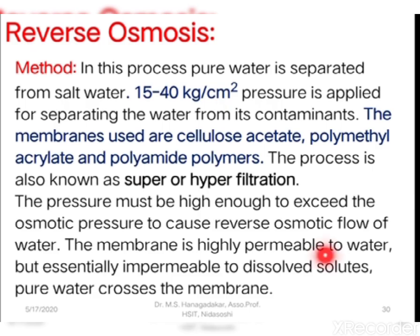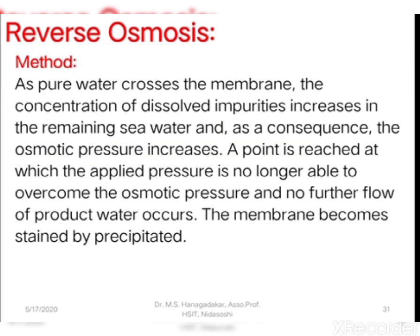The membrane is highly permeable to water only but essentially impermeable to the solutes present in the water. As pure water crosses the membrane, the concentration of dissolved solids increases on the sea water side. As a consequence, the osmotic pressure increases more and more. When a point is reached at which the applied pressure is no longer able to overcome the osmotic pressure, no further flow of water occurs, and the membrane process becomes stained or precipitated. The membrane must then be cleaned for further filtration.